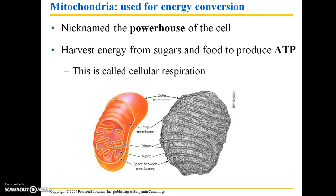Mitochondria are also used for energy conversion. They are nicknamed the powerhouse of the cell, and they harvest energy from foods such as sugars in order to produce ATP — adenosine triphosphate — which is the cell's universal energy source. This process of harvesting energy from sugars and other foods to produce ATP is known as cellular respiration, and we will devote a whole chapter to this process later in the semester.